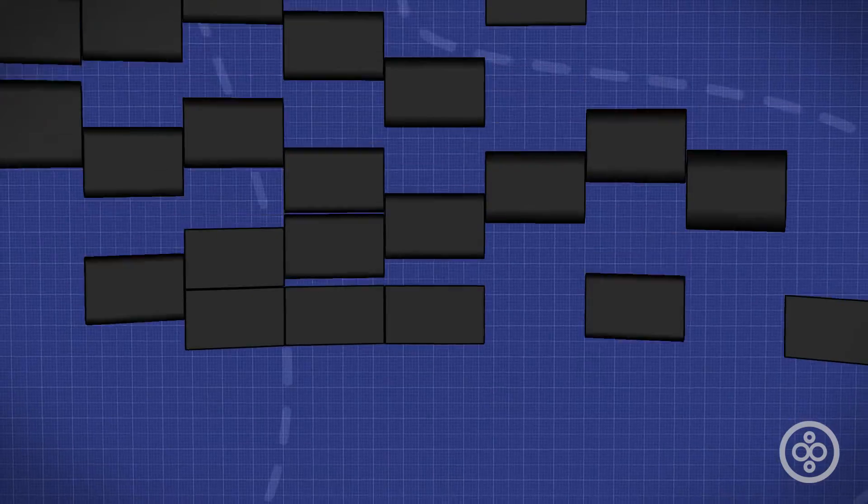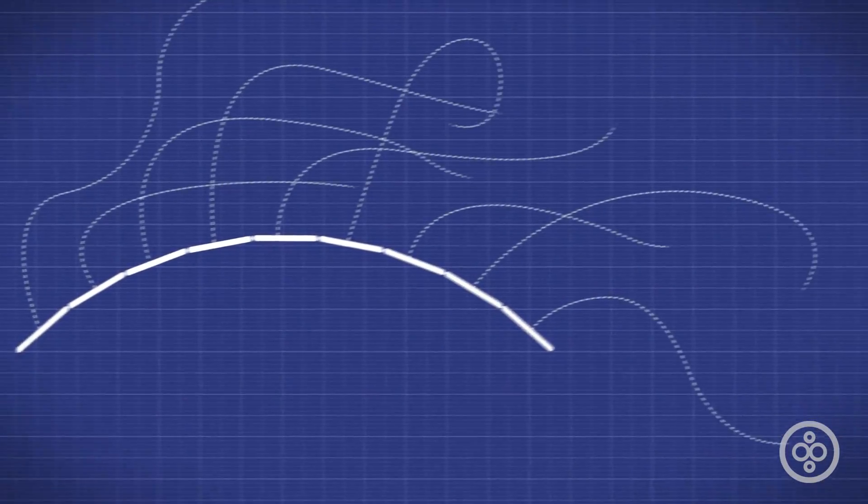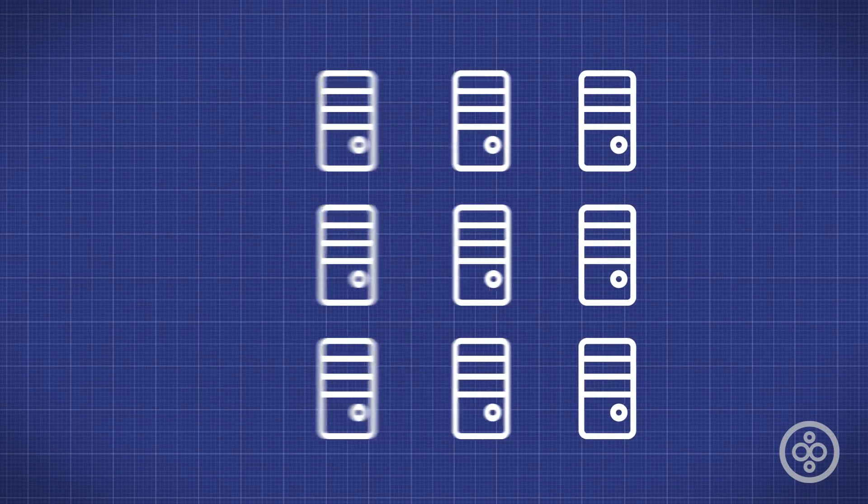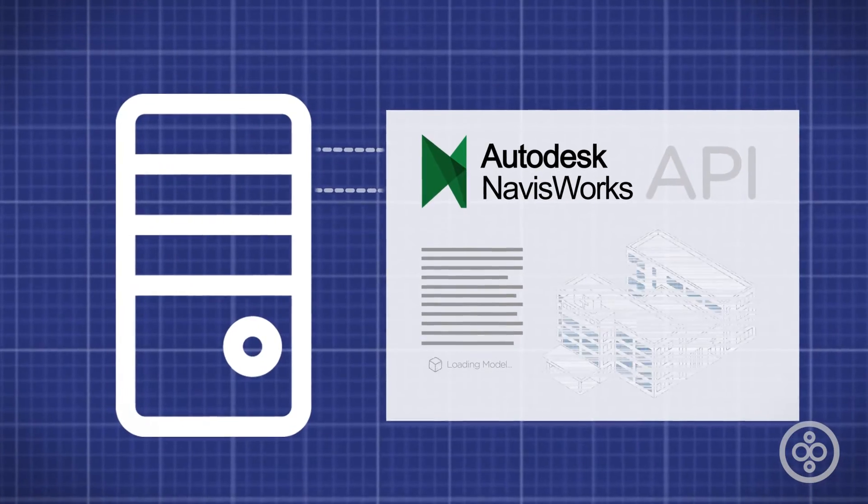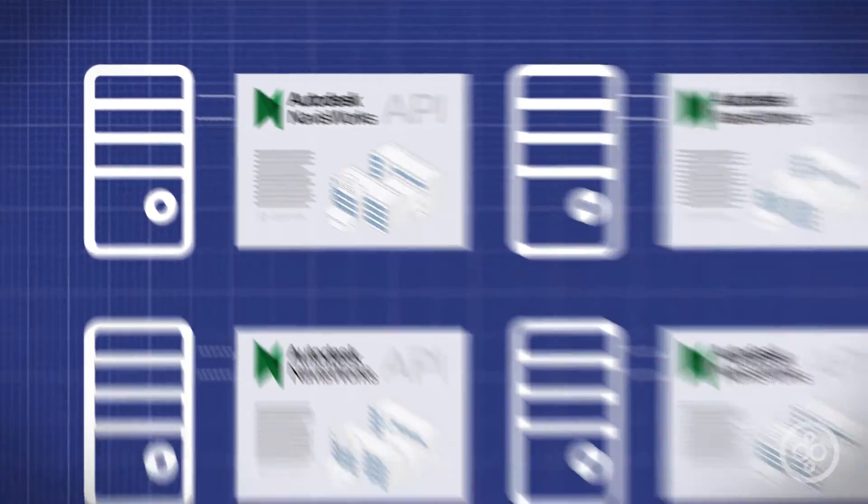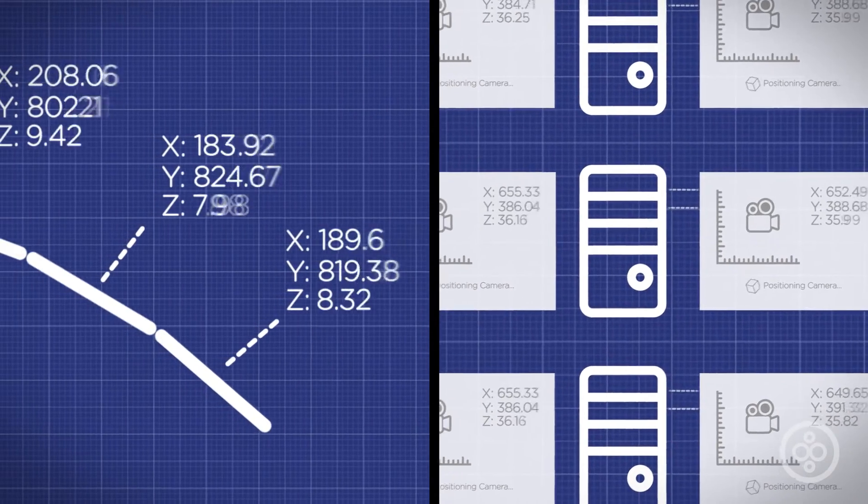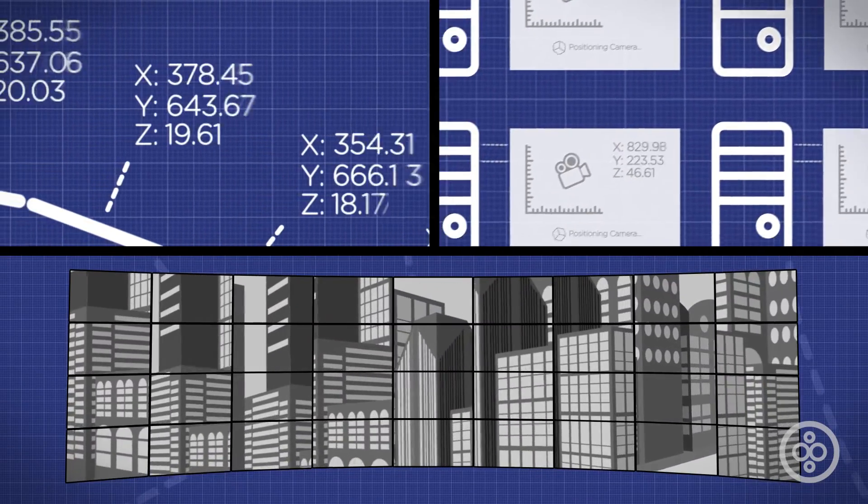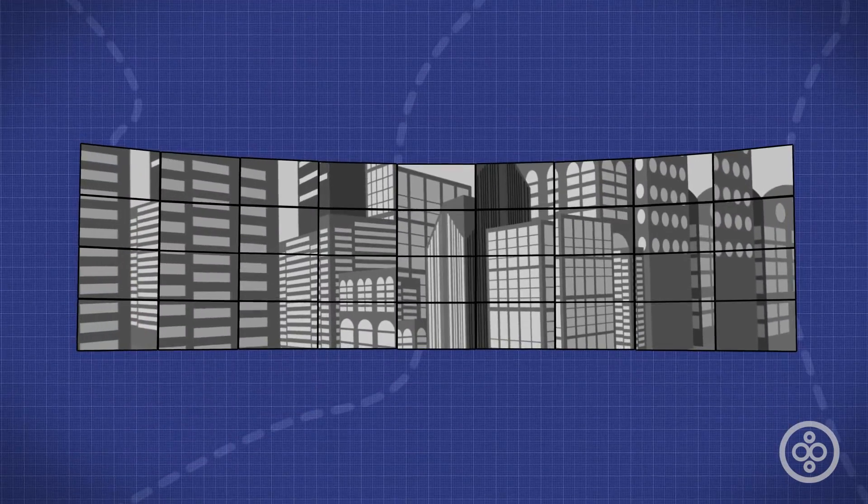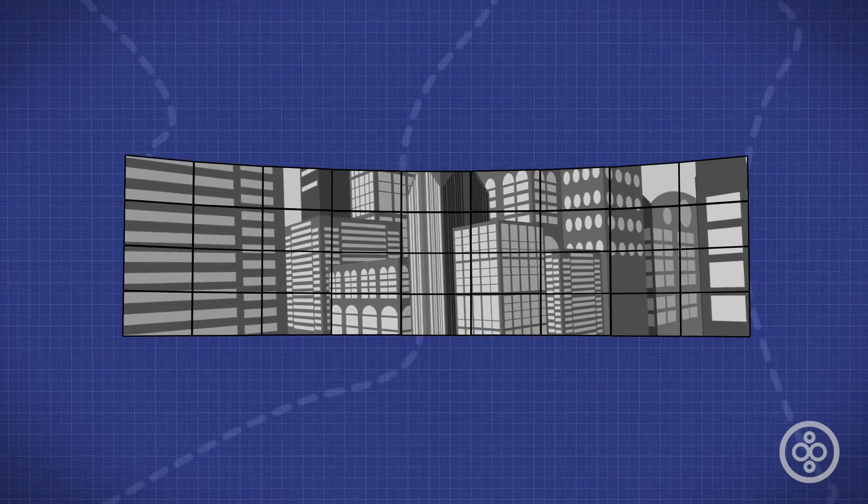So this BIM cave has a total of 36 46-inch monitors. Each column has its own dedicated computer running a specifically designed application that utilizes Autodesk Navisworks API. The same model is loaded onto each computer, and the application tells Navisworks to place the camera in a specific position. The camera's angle is determined by the angle of one column to the next. You put these columns together, and you get the illusion of an immersive image on your BIM model.